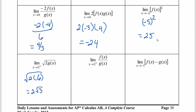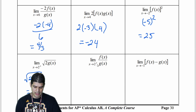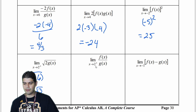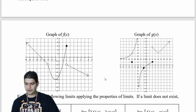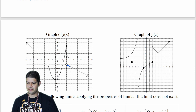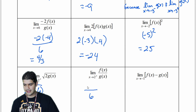Now looking at f of x divided by g of x as x approaches 2 from the right. G of x from the previous problem is already known to be 6. For f of x at 2 from the right, approaching the line, the y-value is negative 2. So we have negative 2 over 6, which simplifies to negative 1 third.